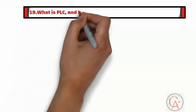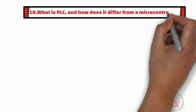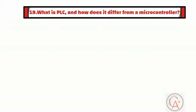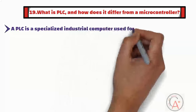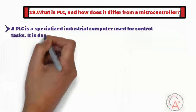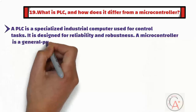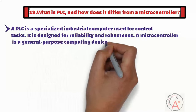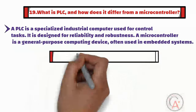The nineteenth question is: what is PLC and how does it differ from a microcontroller? A PLC, or Programmable Logic Controller, is a specialized industrial computer used for control tasks, designed for reliability and robustness. A microcontroller is a general-purpose computing device, often used in embedded systems.